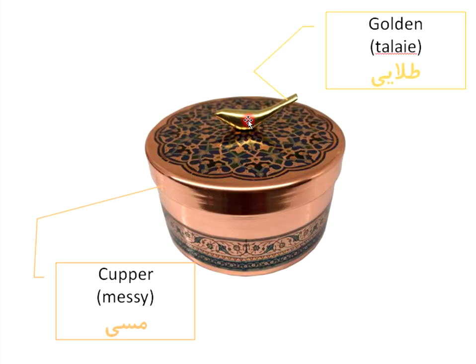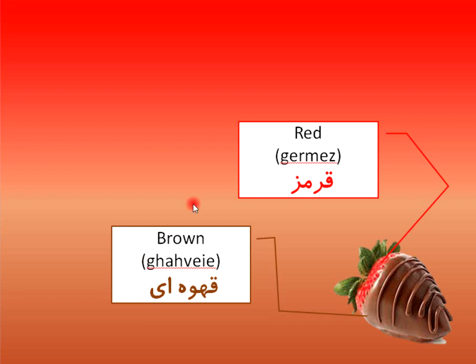Let's continue with some metals. Golden is talai. And copper is mesi. Then we have red — quirmez. And brown — quahvi.